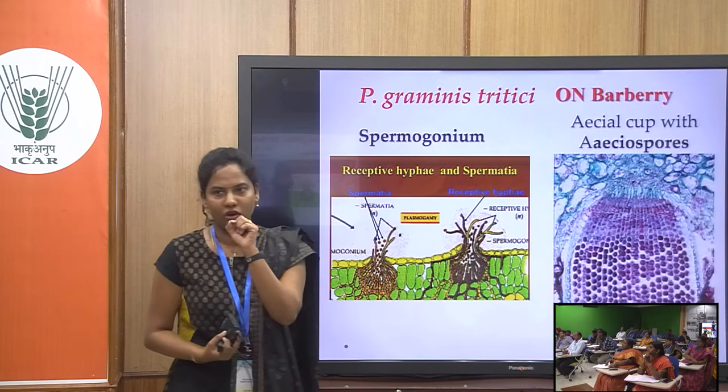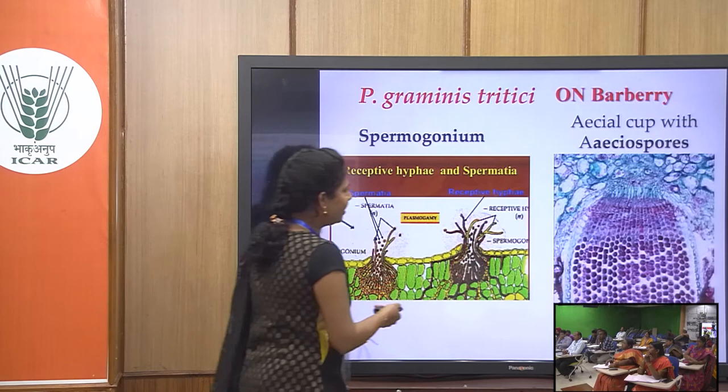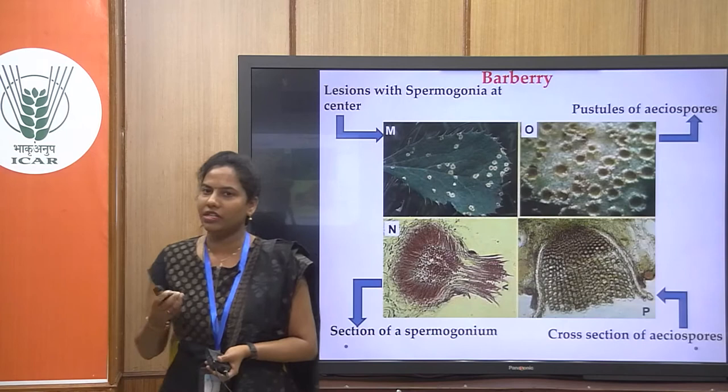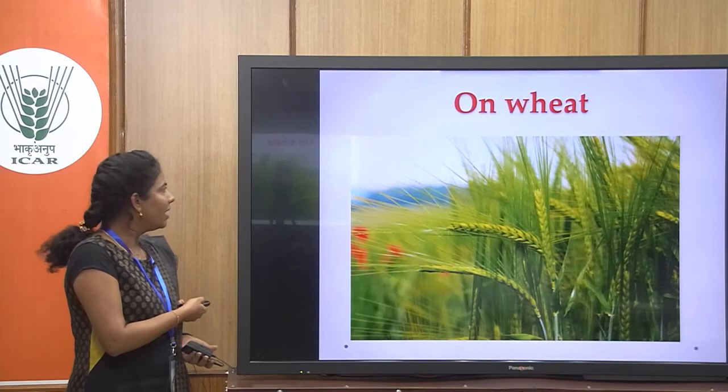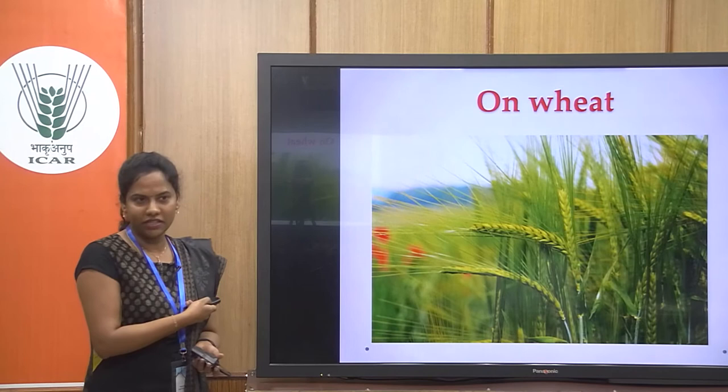The hyphae then start producing the aecial cup — the second spore stage, called the aecium — in which the aeciospores are produced. These aeciospores are small in size, round in shape, and arranged in chains, as you can see here. These two stages — pycniospores and aeciospores — are produced on the barberry plant.